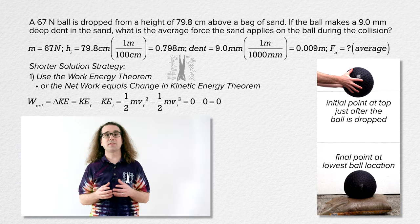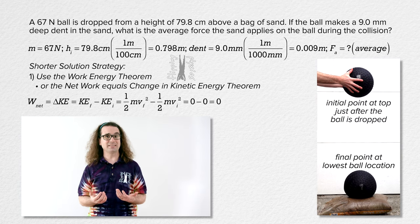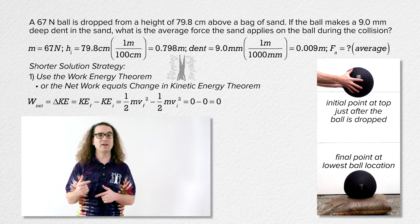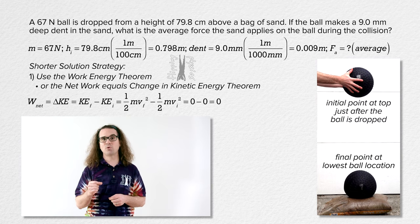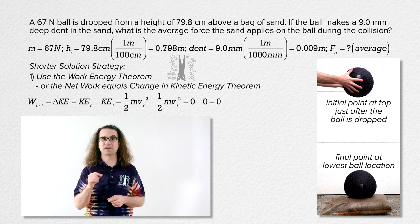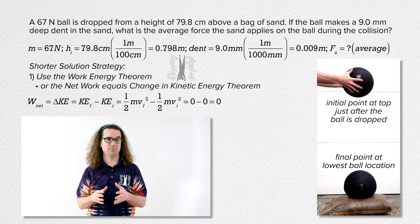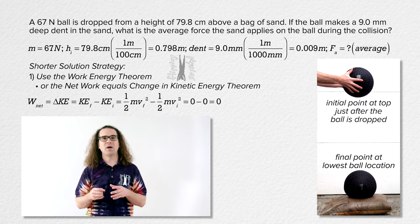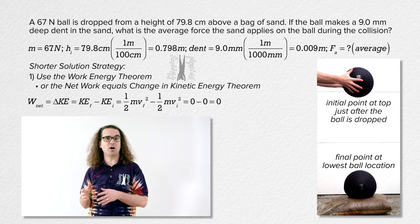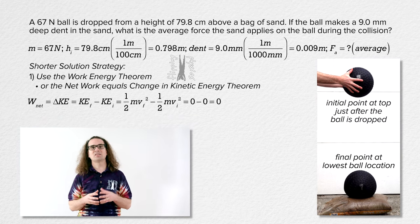That means both the initial and final velocities equal zero and the net work equals zero. That is correct, Bobby. There is zero net work done on the ball over the entire event — going all the way from the initial point where the ball is dropped to the final point at the bottom of the dent where the ball is changing direction from moving down to moving up. When you add up all the work done on the ball by every force, you get that the net work is equal to zero.